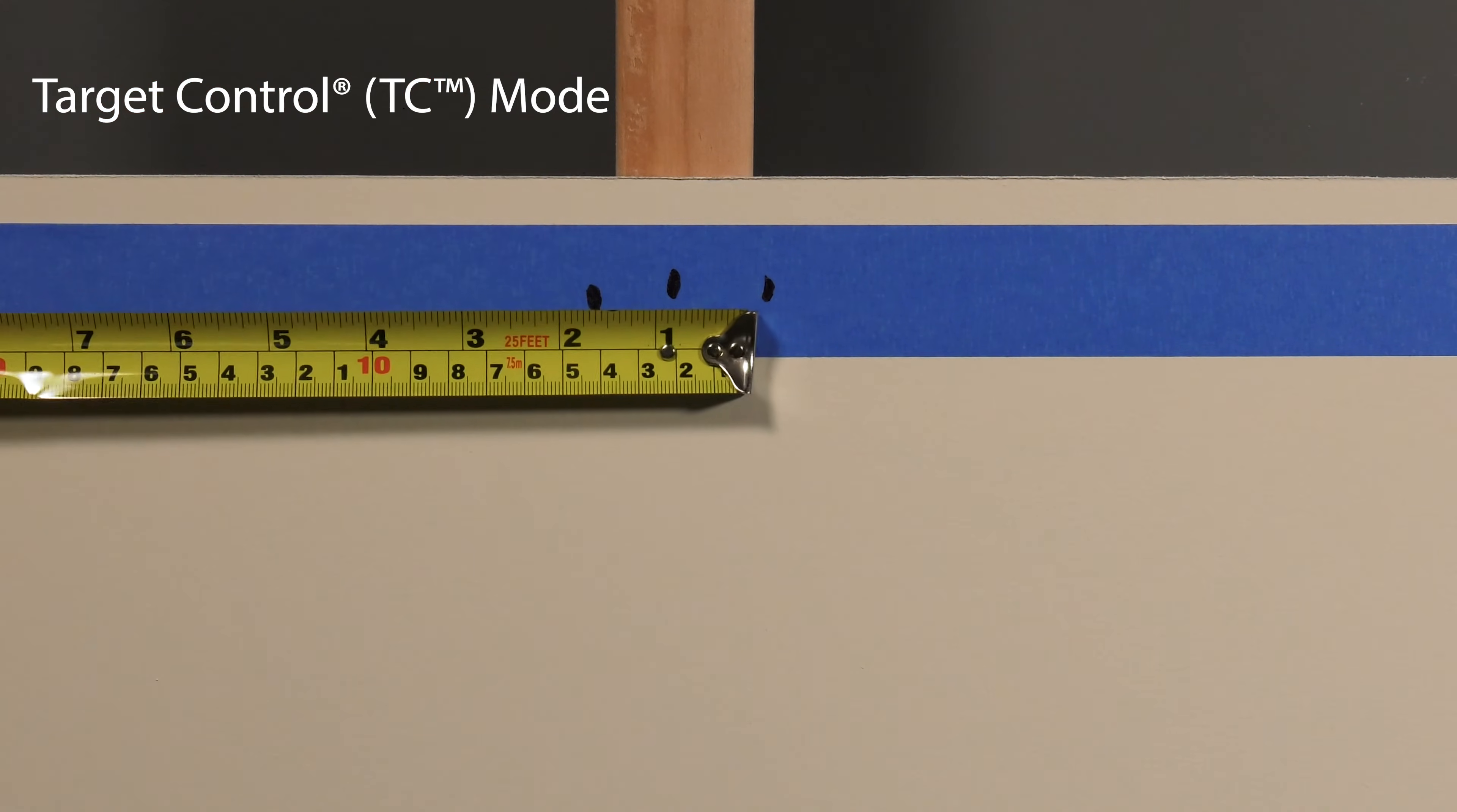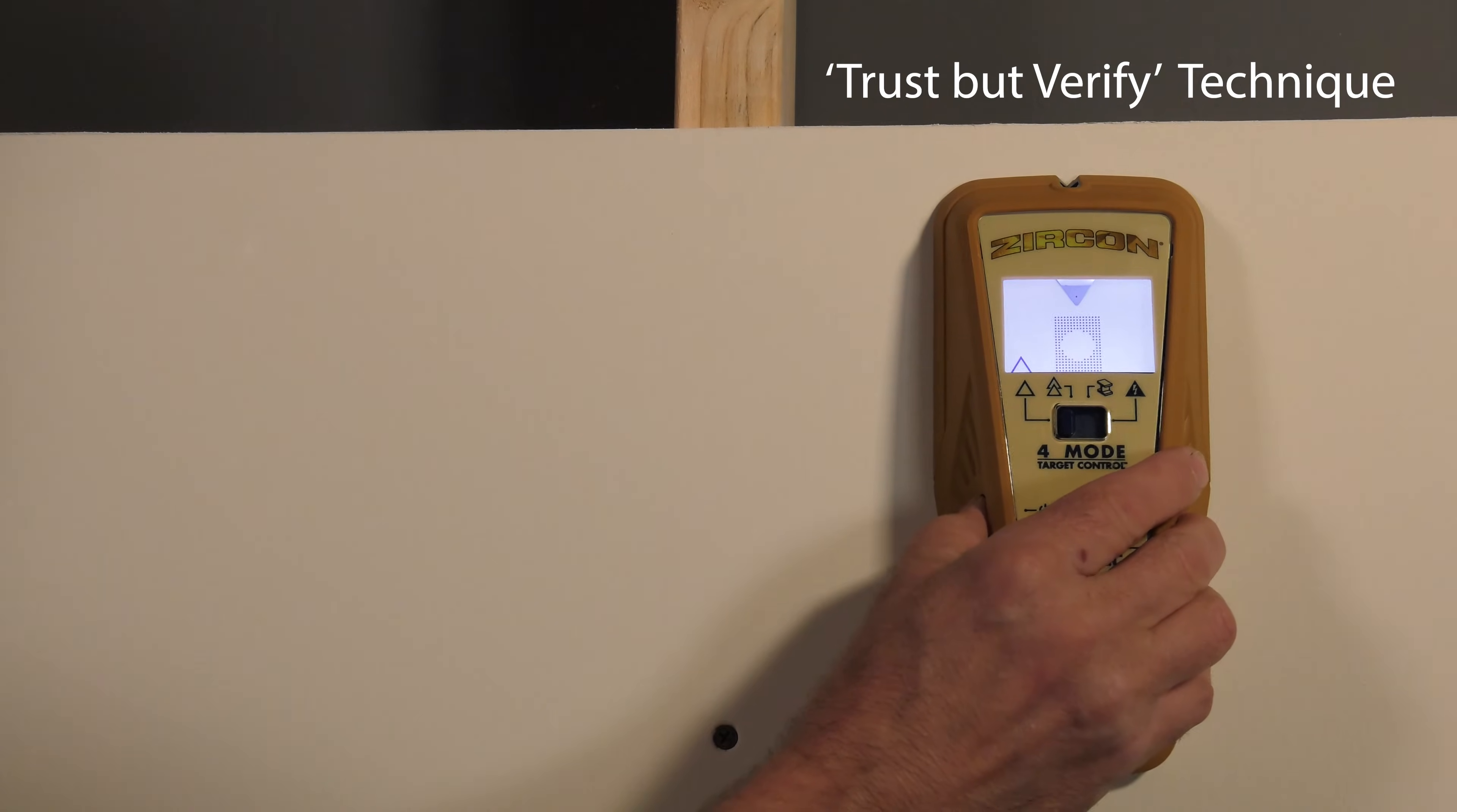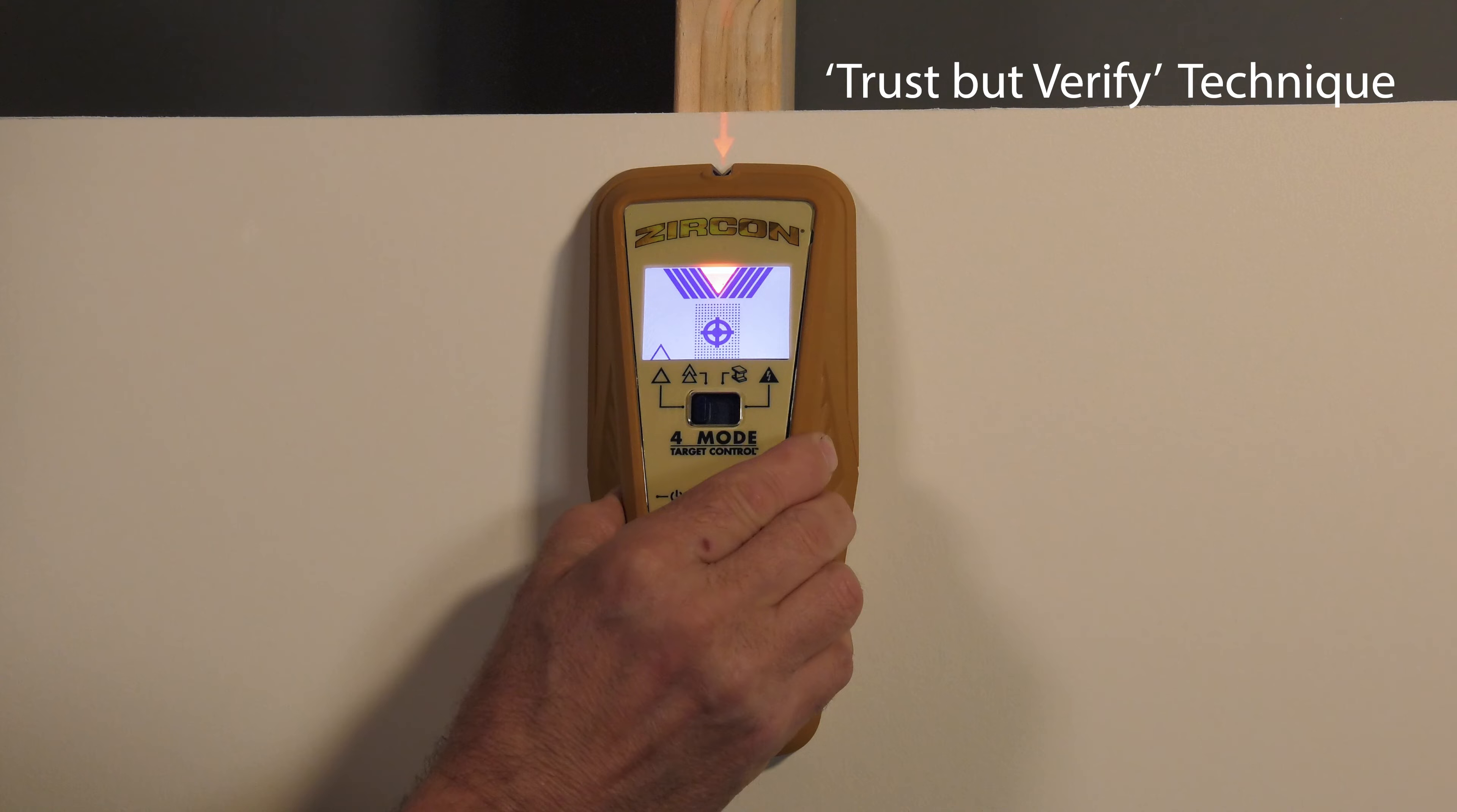The width of the stud is approximately 1.5 inches. You can also use TC mode to help determine areas along the wood stud that are free of metal. The trust but verify technique can help indicate safe to drill zones to minimize hitting existing metals on a stud.